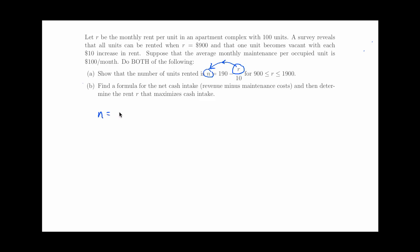So if I'm thinking that n is a function of R, one thing I know about this automatically is that F of 900, if I put in $900 for the rent, I rent all the units, all 100 of them. So F of 900 is 100. That's one data point from the function that's given to me.